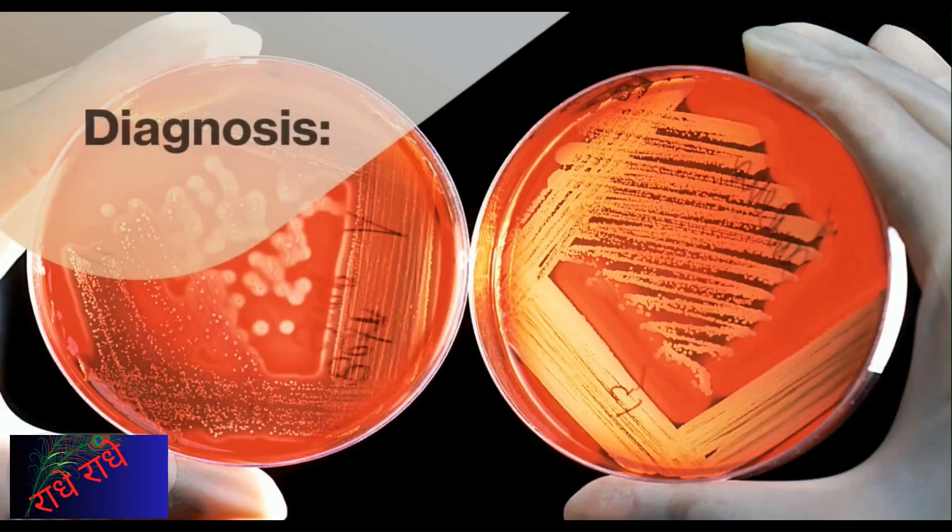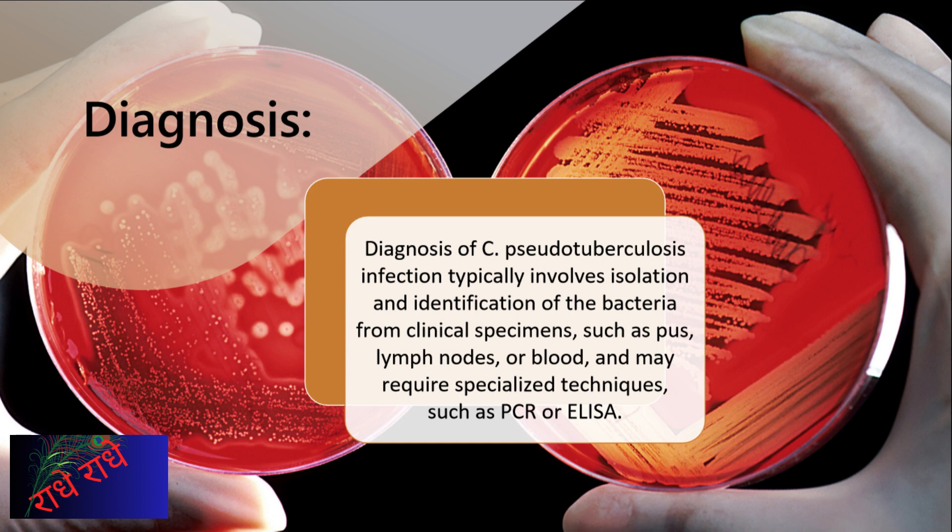C. pseudotuberculosis is a bacterium that can be isolated and identified from clinical specimens, such as pus, lymph nodes, and blood, often requiring specialized diagnostic techniques like PCR or ELISA. Knowing the type of bacteria present is essential for effective treatment, as it can make the difference between a successful outcome or not. Therefore, correctly diagnosing C. pseudotuberculosis is of utmost importance.